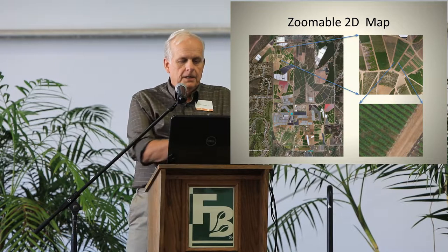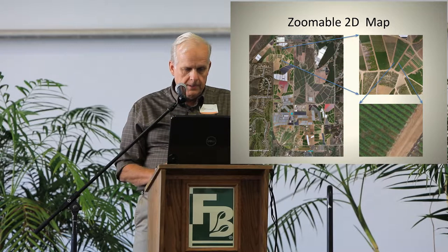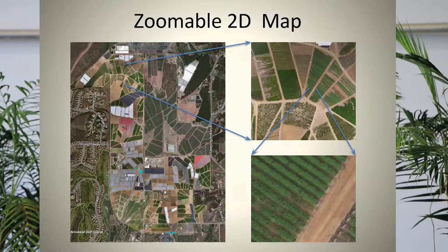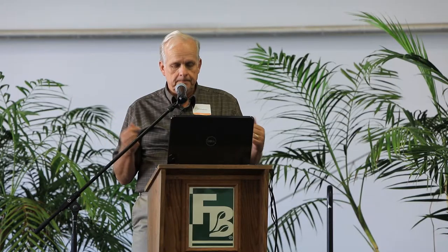The zoomable two-dimensional map shown here is the Milano Fields — flower growers in Oceanside with about a 350-acre ranch. I'm flying the whole ranch for them. Each map comes out as one picture, but you can zoom in just like with Google Maps. The entire ranch is mapped on a monthly basis so they can go through and see exactly what's going on across their fields over time.